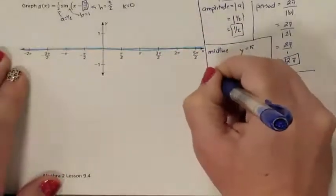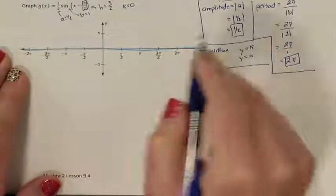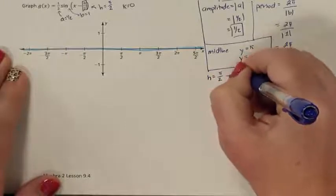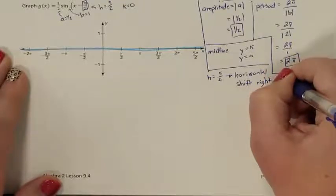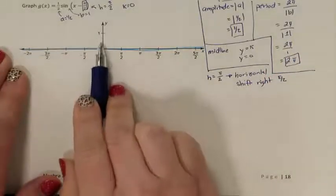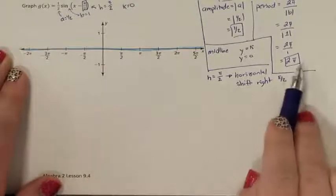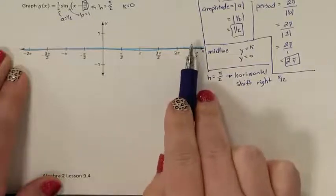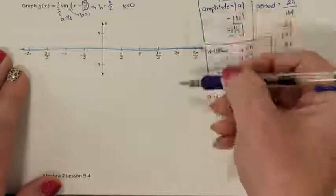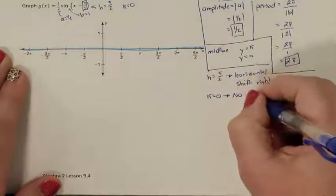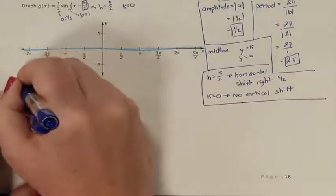My h is pi halves. H tells us how much to move left and right, so I have a horizontal shift to the right by pi halves. What used to be at 0 is now starting at pi halves, and from there I will move a full length of 2 pi. My k is 0, so there is no vertical shift.